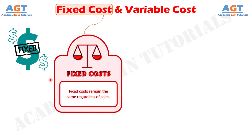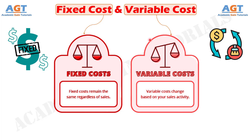Fixed costs, as its name suggests, is fixed in total, that is irrespective of the number of output produced. Variable costs vary with the number of output produced. The cost which remains constant at different levels of output produced by an enterprise is known as fixed cost. They are not affected by the momentary fluctuations in the activity levels of the organization. The cost which changes with the changes in the quantity of output produced is known as variable cost. They are directly affected by the fluctuations in the activity levels of the enterprise.